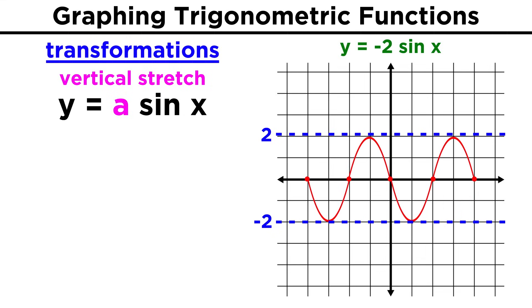If the coefficient is negative, it reflects everything across the x axis, which looks like this. In this way, for any function in the form y equals a sine x, the amplitude will be equal to the absolute value of a.